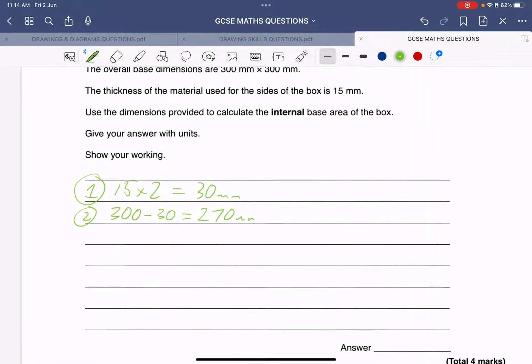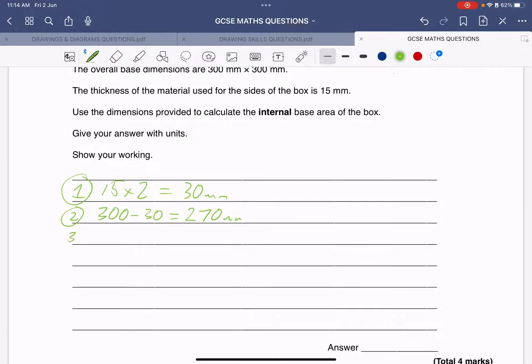Okay, so we've got 270. Now we've got two marks so far. So step 3 is going to be to then calculate the area. To do that, we are going to need to do 270 times 270. And that gives us quite a large number. So we get 72,900 millimeters squared.